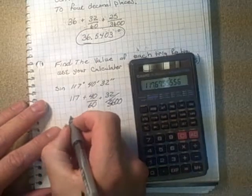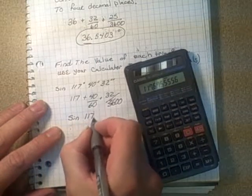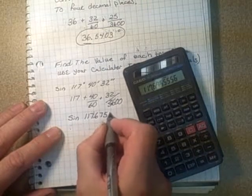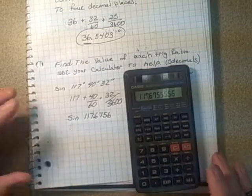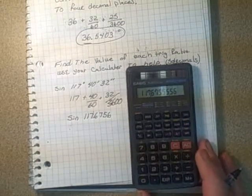This is going to be the sine of 117.6756 degrees if you go to four decimal places. Now I want to go to five for the decimal place, so I'm going to leave all those numbers on the calculator there.